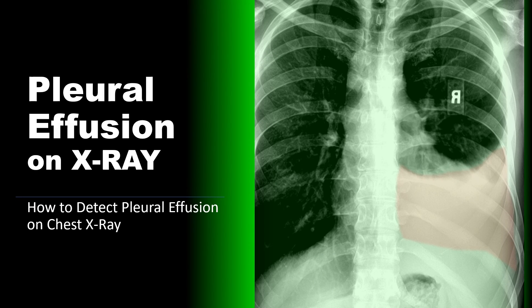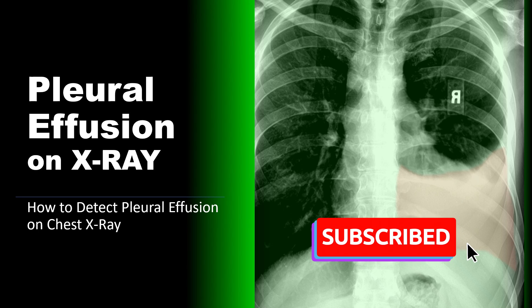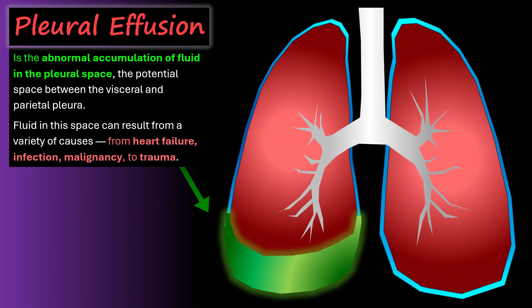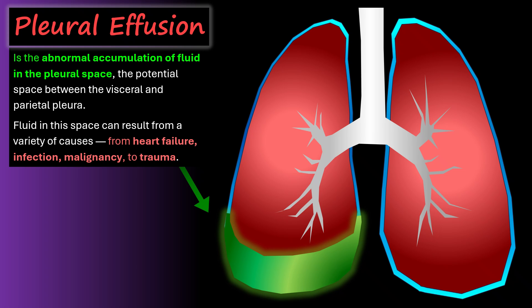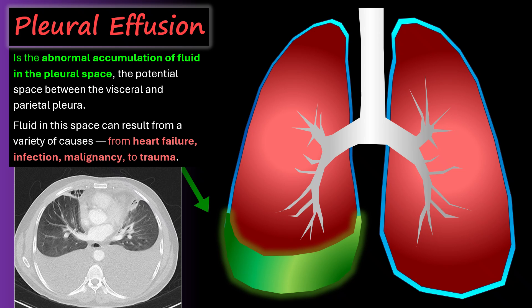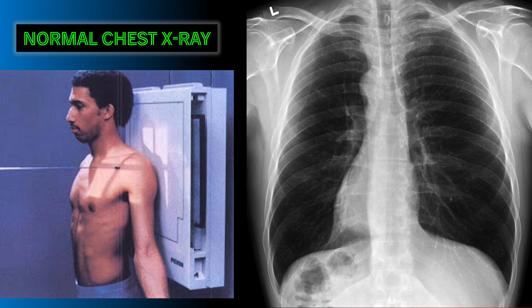Welcome to x-ray review. In this video we're going to look at the pleural effusion on x-ray, one of the earliest radiographic signs of pathology in the lungs. A pleural effusion is the abnormal accumulation of fluid in the pleural space, which is the potential space between the visceral and parietal pleura. Fluid in this space can result from a variety of causes like heart failure, infection, malignancy, and trauma.